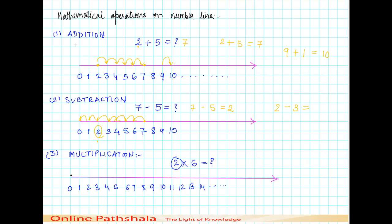We come here. This is the first step, second, third jump, fourth jump, fifth jump, and sixth jump. We ended up at 12. We can say that 2 multiplied by 6 equals 12.